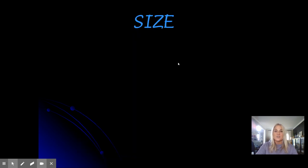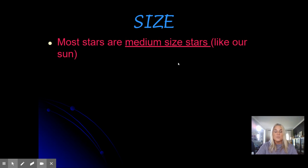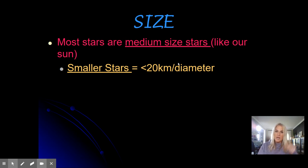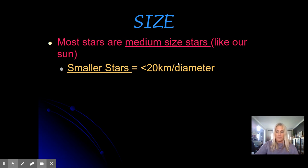The third characteristic of stars is their size. Most stars are medium-sized like our sun, which I like to use as an example because it's a star you're familiar with. However, there are stars that can be really, really small — less than 20 kilometers in diameter compared to the sun. To put that in perspective, 20 kilometers would be like driving from Wyandotte to the middle of downtown Detroit. So some stars can have a diameter that small.